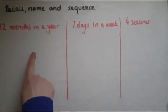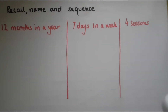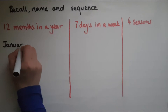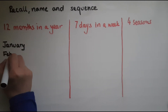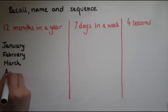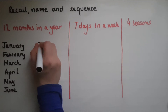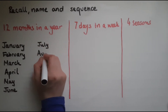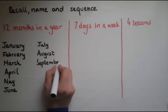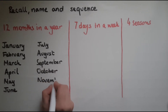I'll write these in order here because knowing the order is really important, but also the spelling is very important, so pay attention to the spelling. So we started with January, and then comes February, March, April, May, June, July, August, September, October, November, December.